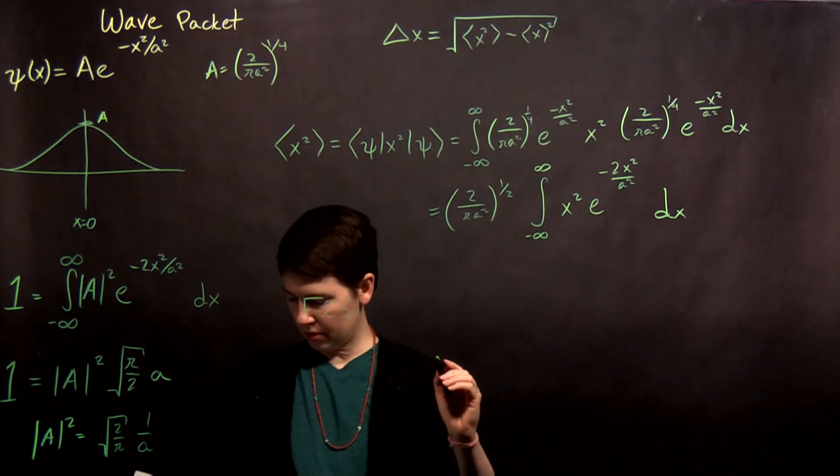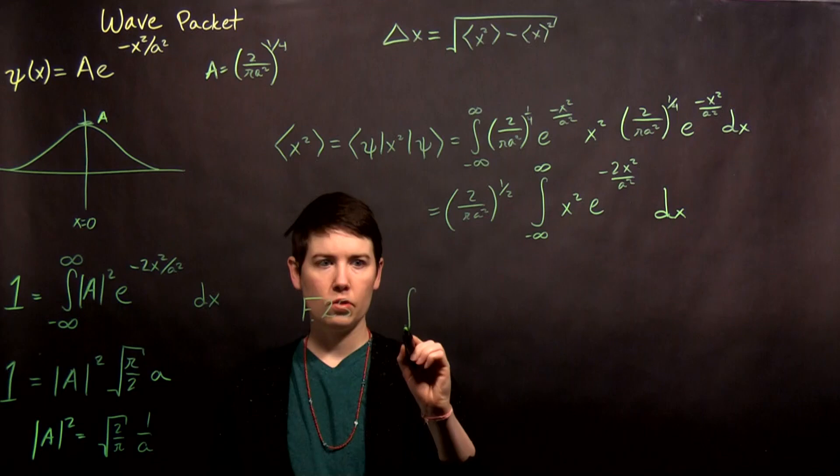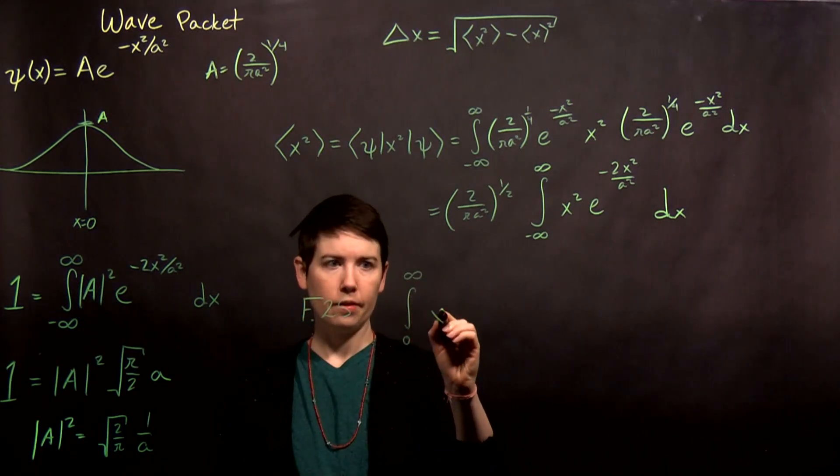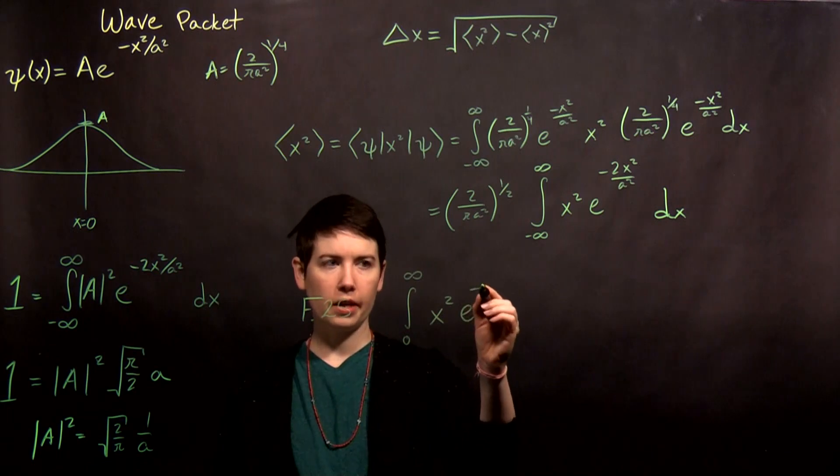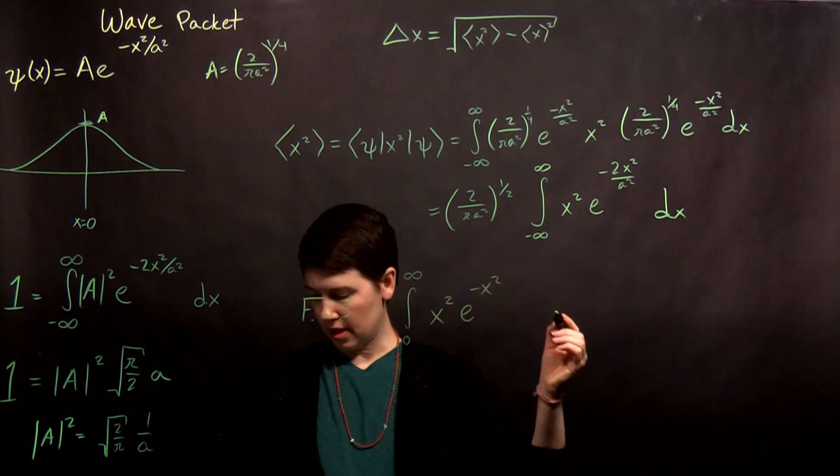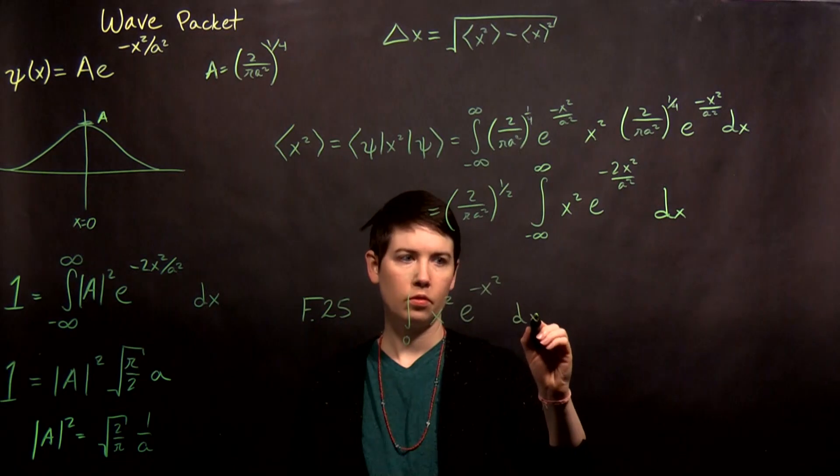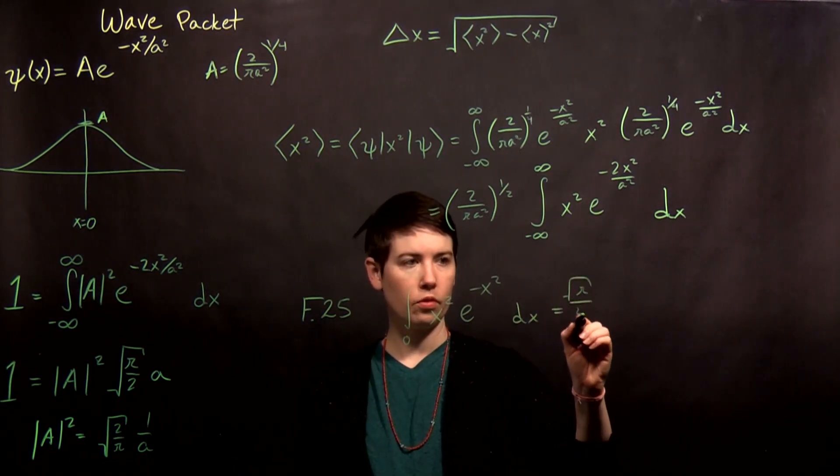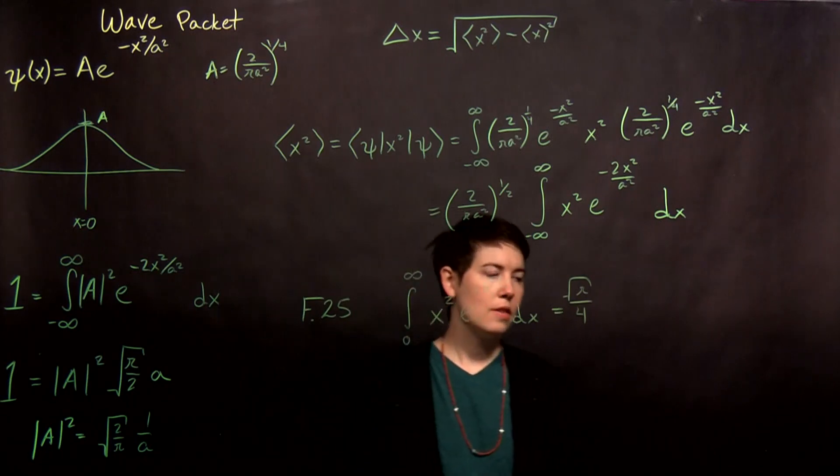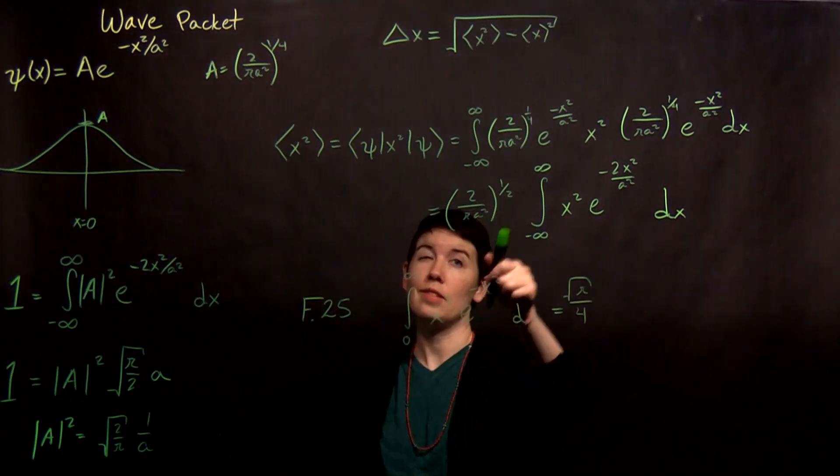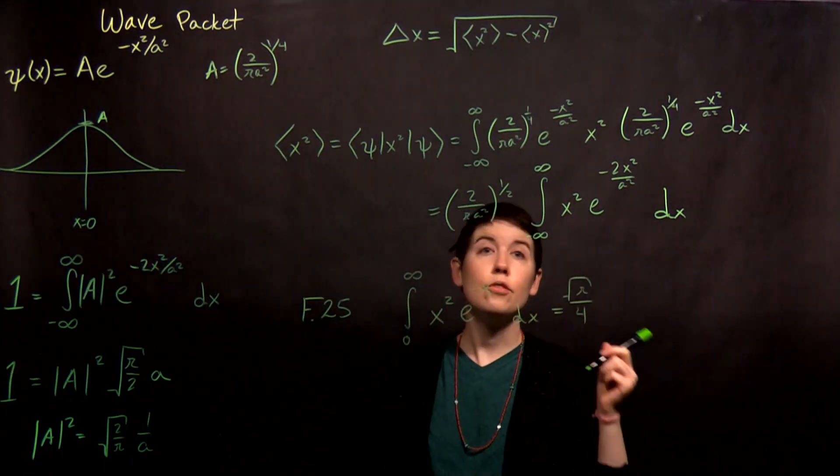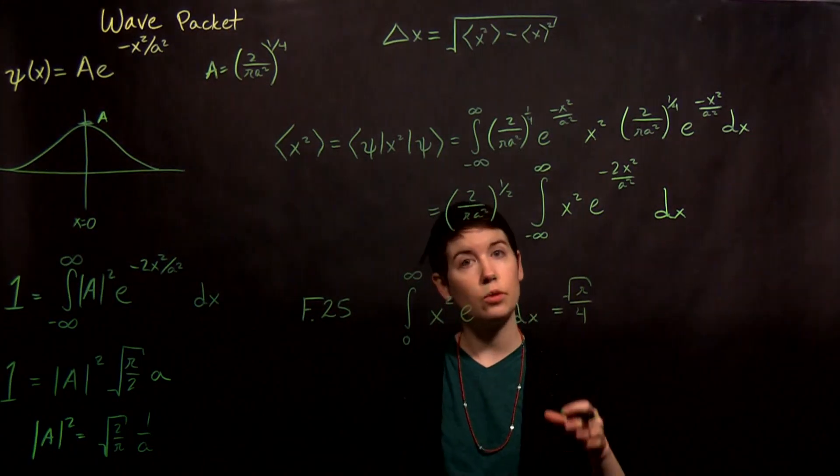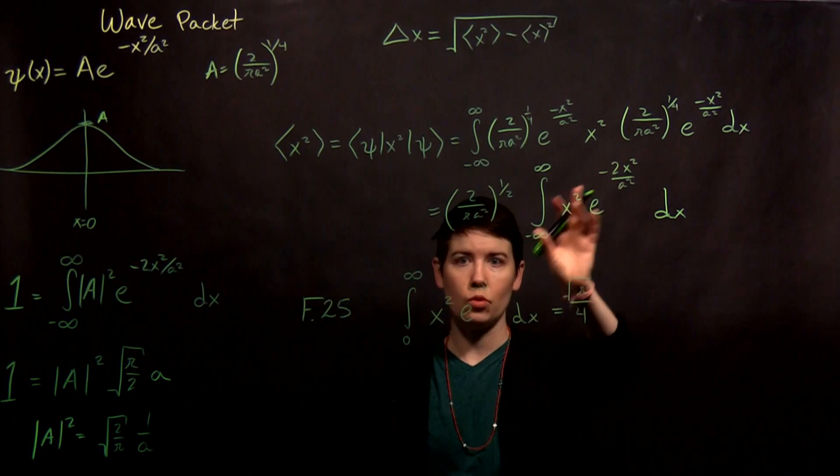What I see is f25. So f25 says that 0 to infinity of x squared e to the negative x squared dx is equal to square root of pi over 4. Now, you might say, Dr. Ackerman, this is not identical to this integral. And you're right, it's not. And so the question you have to ask yourself is, can we do a transformation to get from this to this?